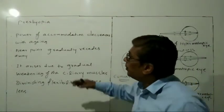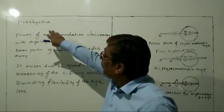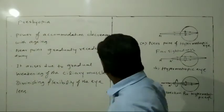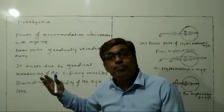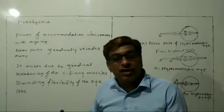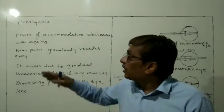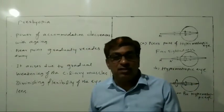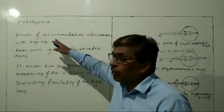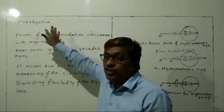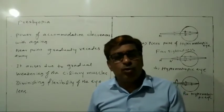Now we discuss presbyopia. See the spelling: P-R-E-S-B-Y-O-P-I-A. What do we mean by presbyopia? This is related to old age. Presbyopia usually comes after crossing a certain age. It is one of the defects of the eye — defect, not disease, don't misunderstand.